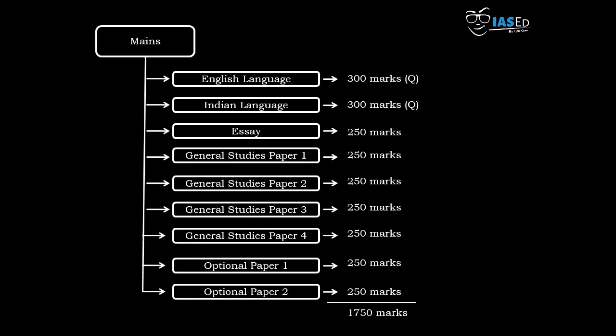Mains consists of various papers: English language, one Indian language, essay, General Studies paper one, General Studies paper two, General Studies paper three, General Studies paper four, optional paper one, and optional paper two.